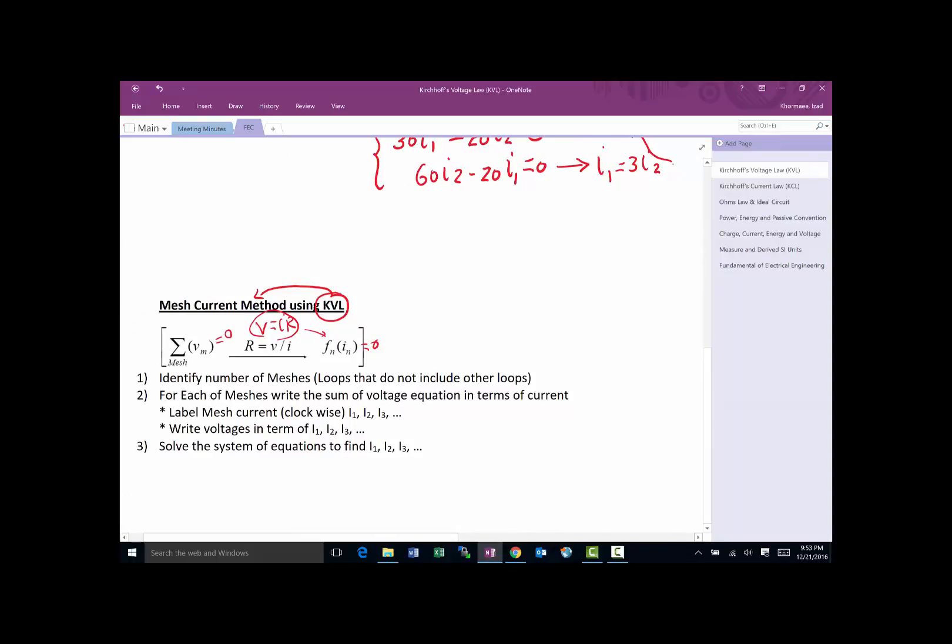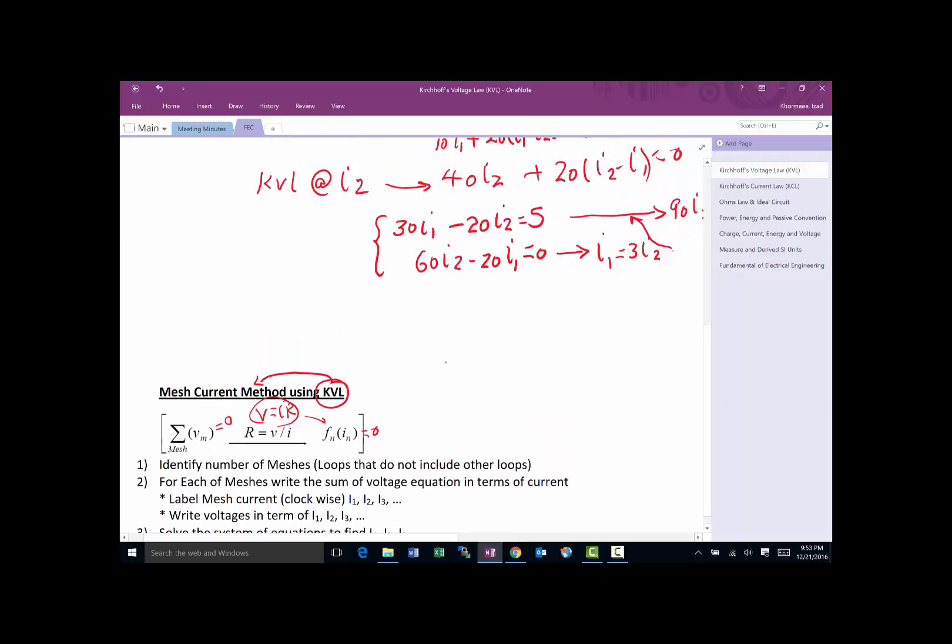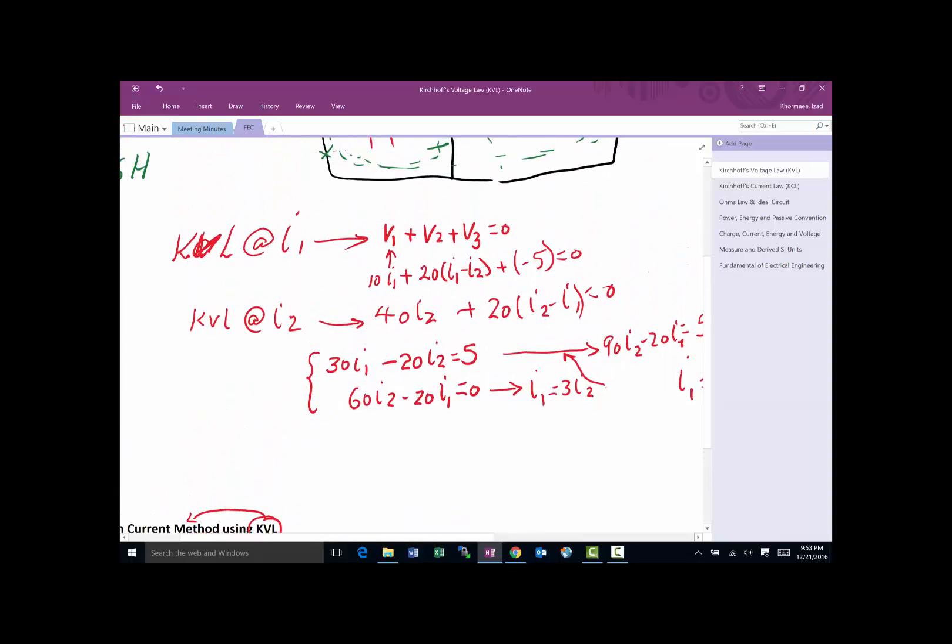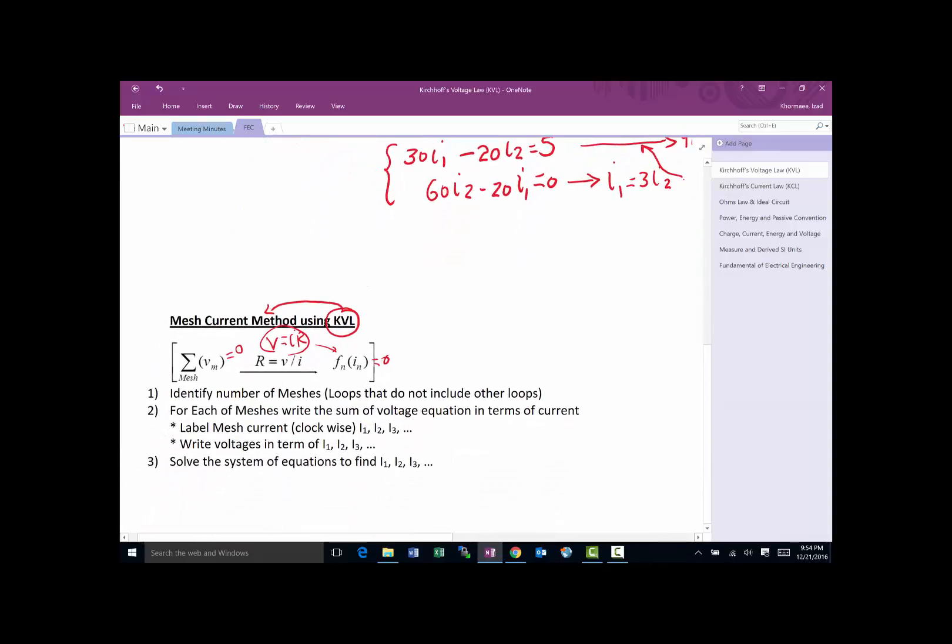Let's go back and summarize the steps. We identified the meshes—we had two meshes. That was step one. Step two: for each mesh, we added all the voltages around but we wrote it as much as possible in terms of the current, IR equals V. Then we solved the equation. Really simple three steps. As long as you follow those steps, you'll be able to solve this straightforward with no problem. Just make sure you label everything so the reader knows this is KVL for I1, this is KVL for I2. Most of the time we do not write this intermediate step and go directly to this equation. That brings us to the end of the introduction to KVL.